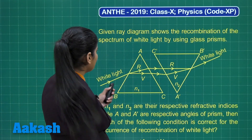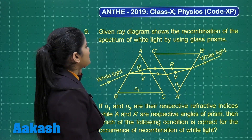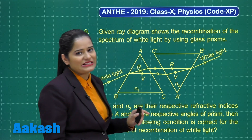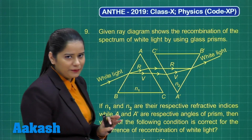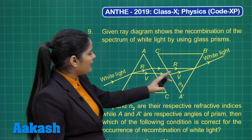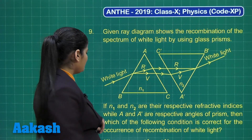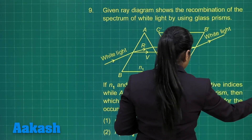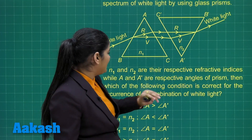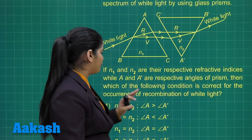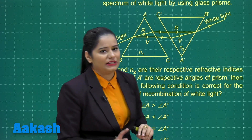Moving on to the next question which says: the given ray diagram shows the recombination of a spectrum of white light by using a glass prism. This is the diagram that we are given. N1 and N2 are the refractive indices of these two prisms, and A and A dash are the respective angles of the prisms. Then which of the following conditions is correct for the occurrence of recombination?